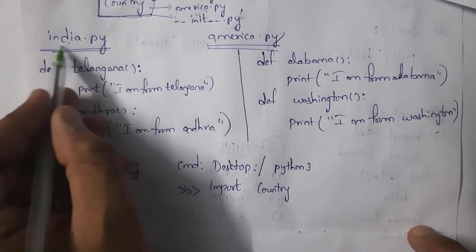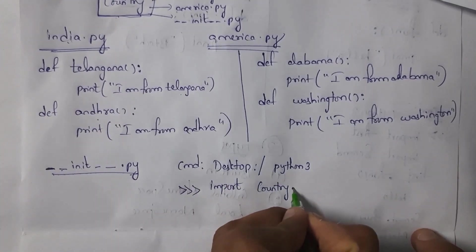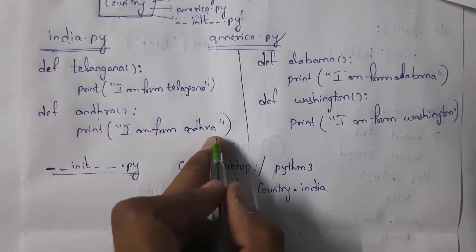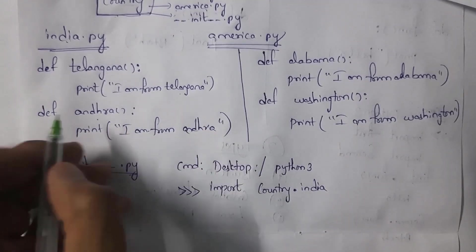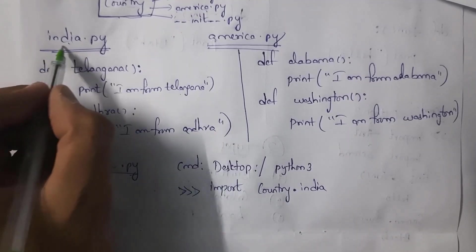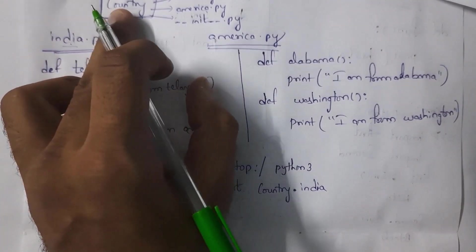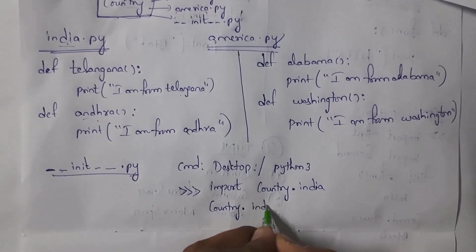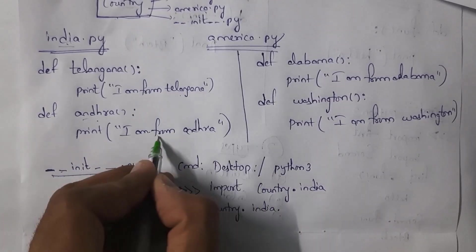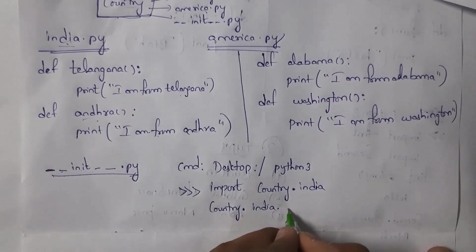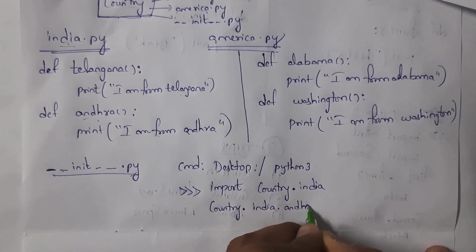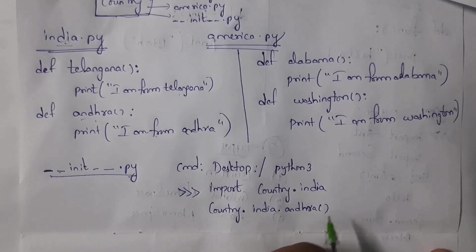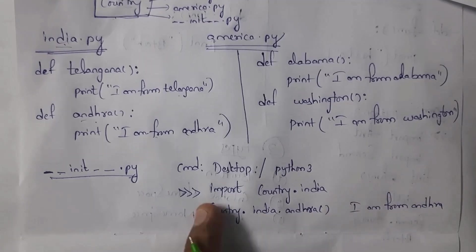To print 'I am from Andhra', which is present in india.py, write: country.india.andhra(). Here 'country' is the package name, 'india' is the module name, and 'andhra' is the function name — include brackets because it is a function. When you run this line of code and press Enter, you will get the output: 'I am from Andhra'.